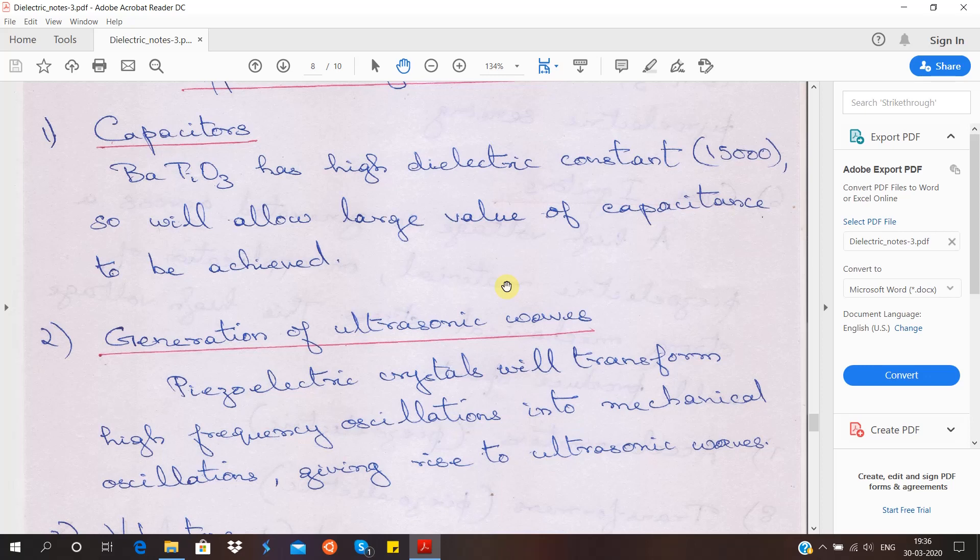Now there are two more phenomena called piezoelectricity and pyroelectricity. Piezoelectricity is when polarization occurs due to mechanical changes, and pyroelectricity is due to change in heat or increase in temperature. Whenever you heat up the material, if polarization occurs, then you call it as pyroelectricity.